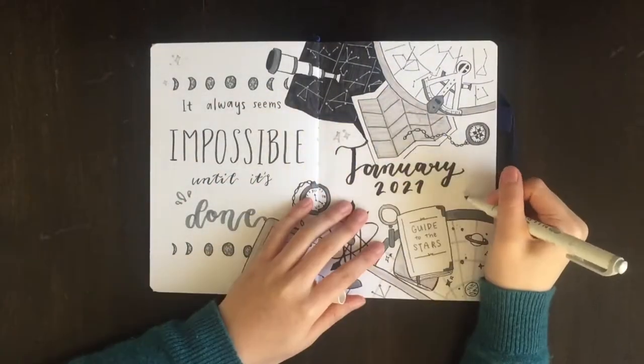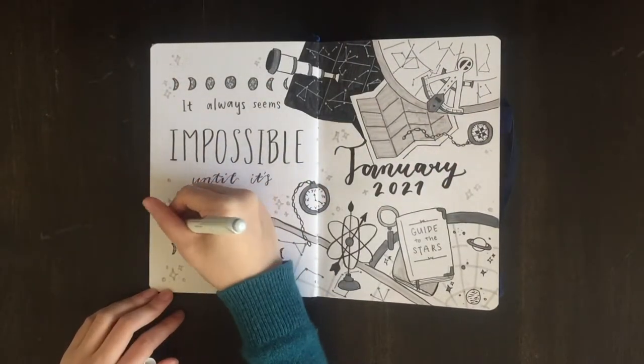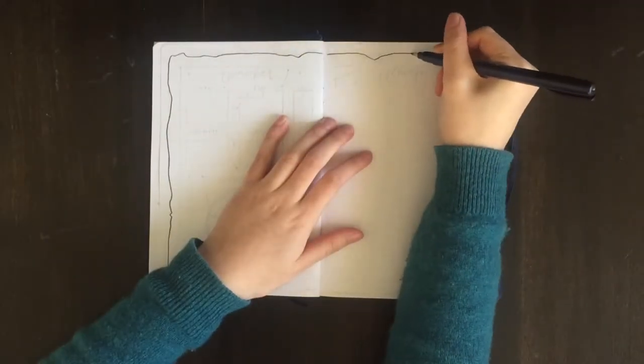Now just using the thin side of my gray mild liner, I'm going through and adding in a few little sparkles wherever it seems a little bit empty. And now we're done with the title page.